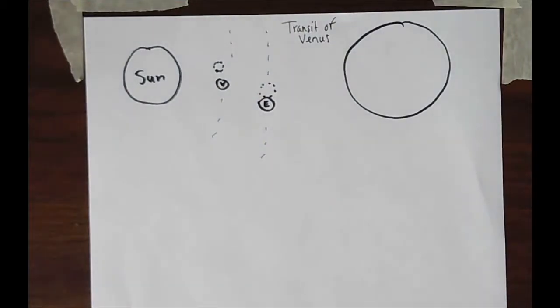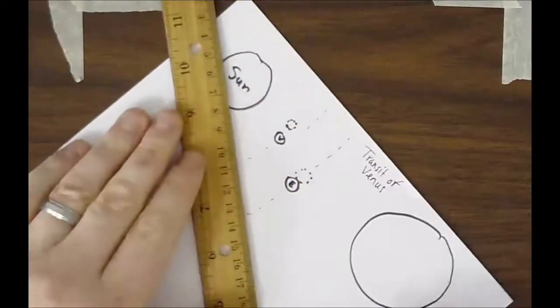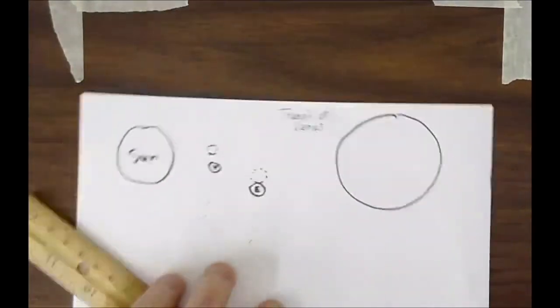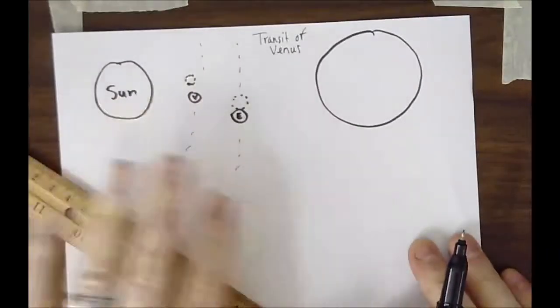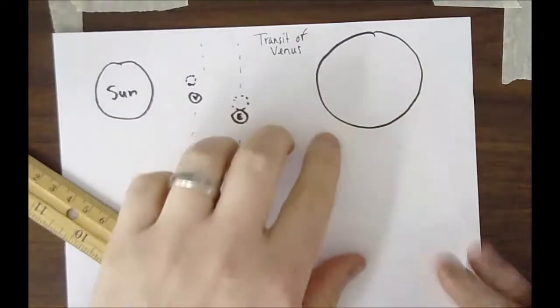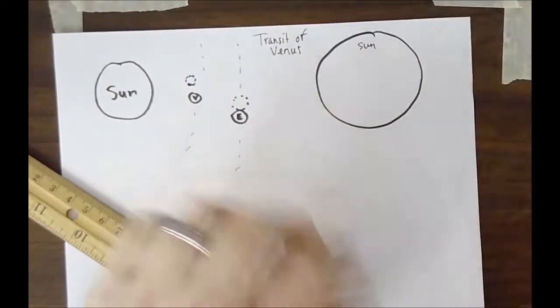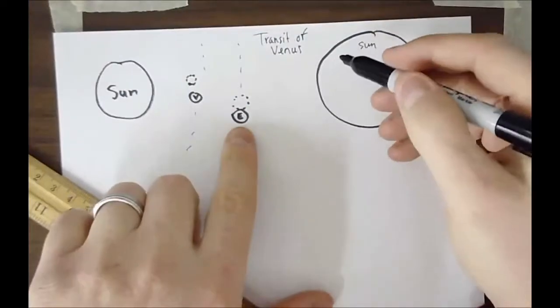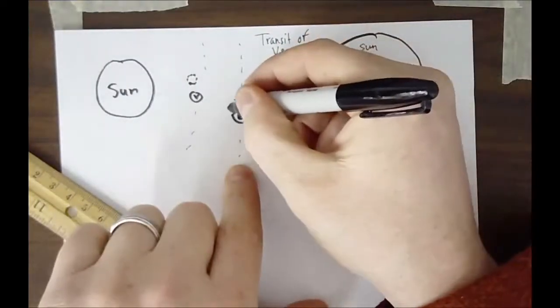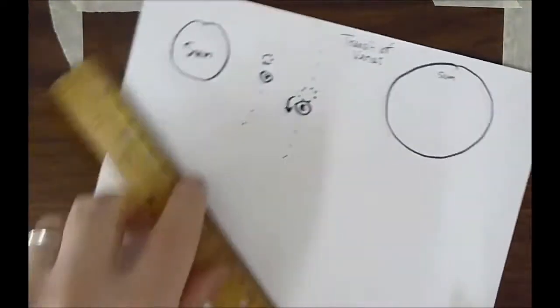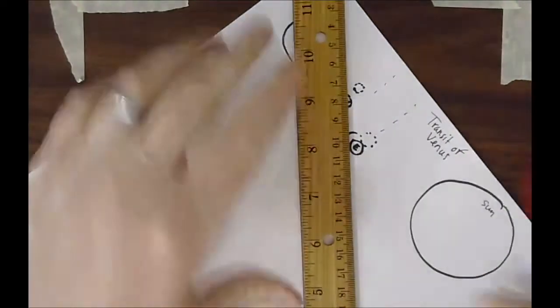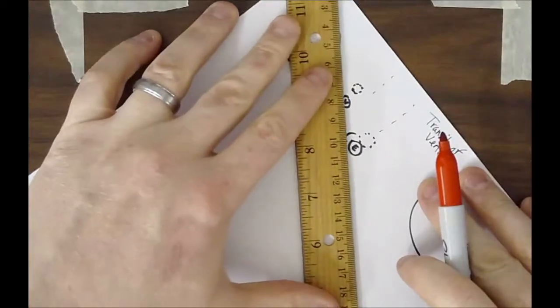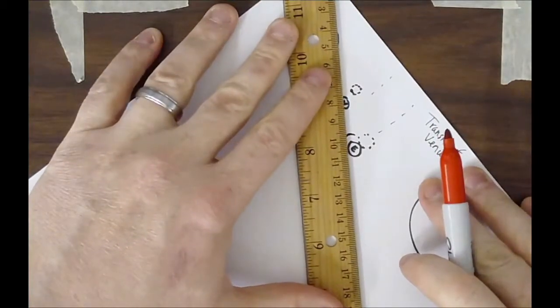Now what's interesting is when you view this, if people on the Earth would view this at the same time and they were to calculate how long it takes Venus to trace across the Sun, here I have a mock Sun here. The people on the bottom of the Earth, remember the Earth is rotating counterclockwise, when they view Venus they'll actually see something like this.